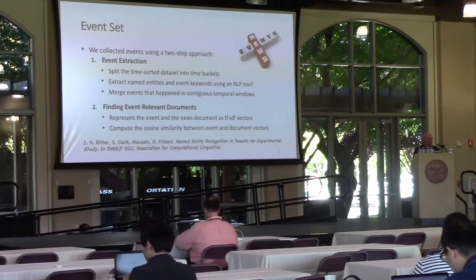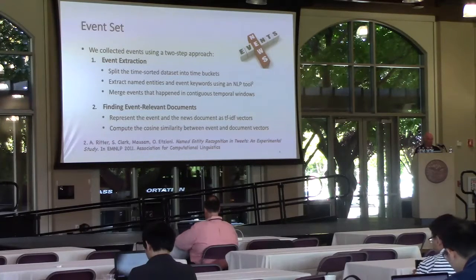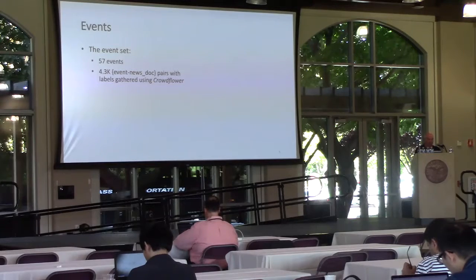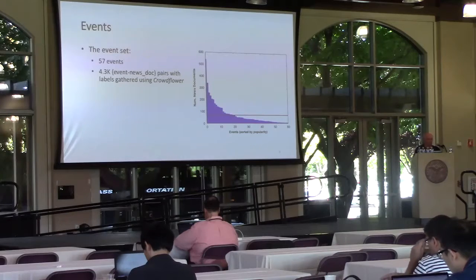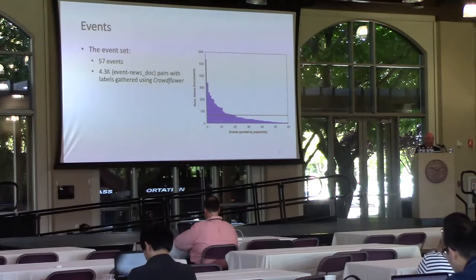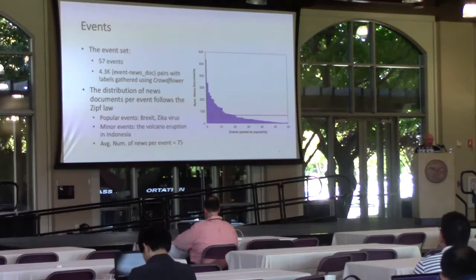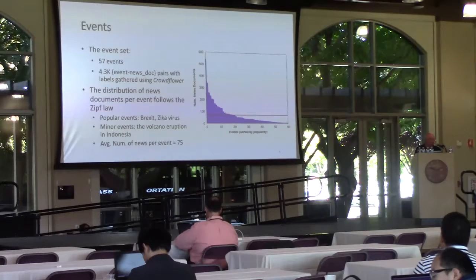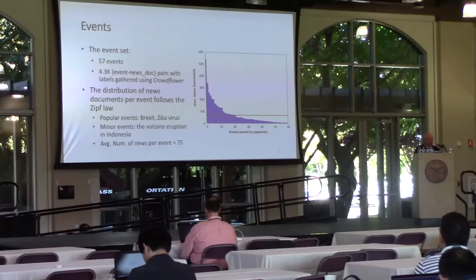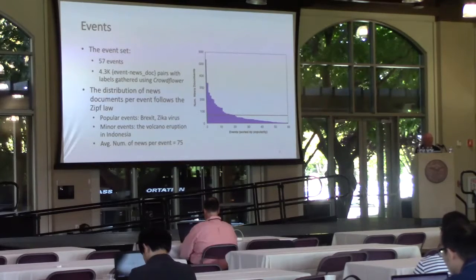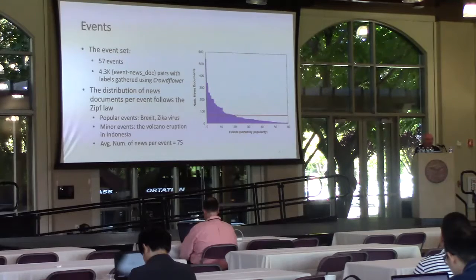We collected news about 43,000 news documents about 57 events, and we labeled them using CrowdFlower. This is the kind of distribution in which documents are about a specific event — as you can see, it follows the classic long-tail distribution. Events ranged from very popular ones like Brexit and the Zika virus to very minor events like a volcano eruption in Indonesia — not that the event was unimportant, but simply that there was less coverage in the news sources we looked at. The average number of news articles per event was about 75.